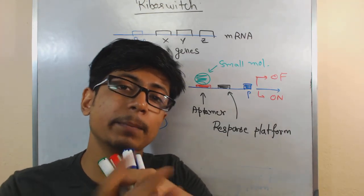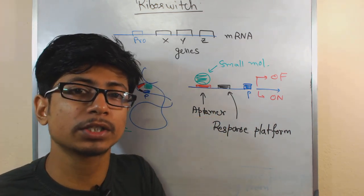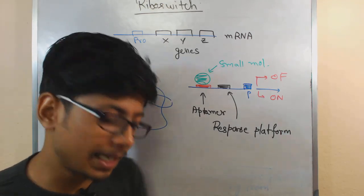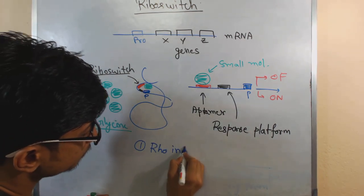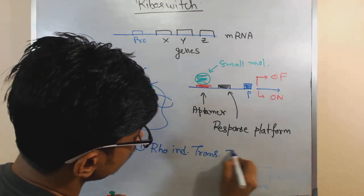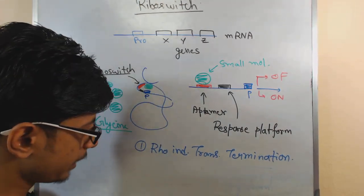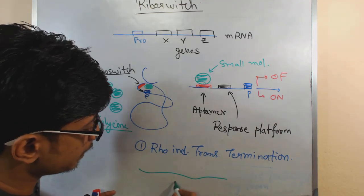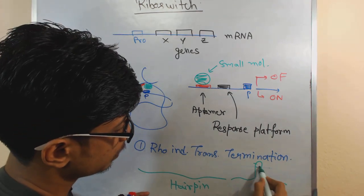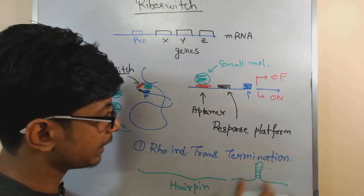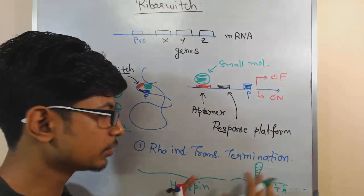Whether the mRNA can bind with the ribosome or not is completely dependent on the riboswitch present in it, which helps hold the translation process for a particular reason. Another example is Rho-independent transcription termination. In Rho-independent transcription termination, the mRNA needs to form a hairpin loop, and that hairpin structure, followed by U sequences, finally helps the polymerase dissociate.